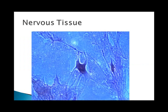Nervous tissue controls the greatest proportion of the body's responses to a changing environment. It consists of two types of cells: neurons or nerve cells, and neuroglia, which protect and metabolically support the nerve cells. Basically, they have their own set of cells just to feed them. Those are the four main types of tissue.